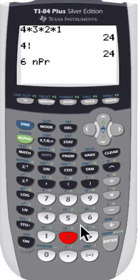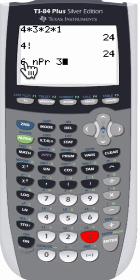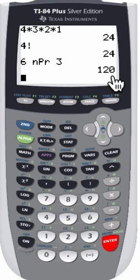So nPr, that is permutations of six objects taking three at a time. Enter. And we get our permutations.